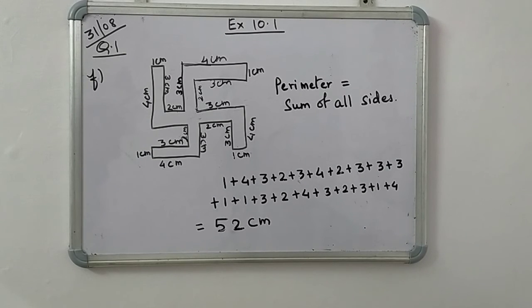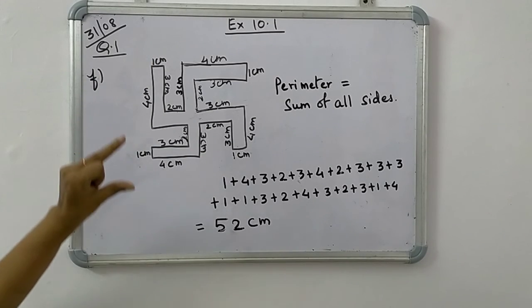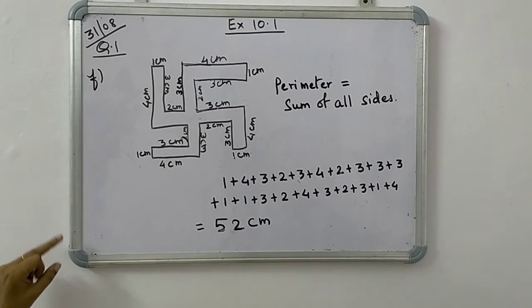So perimeter is equal to sum of all sides and we have to add all the sides. Very carefully you have to add and don't skip a single number. Like this only, that next part is also same. We have to add all the sides.